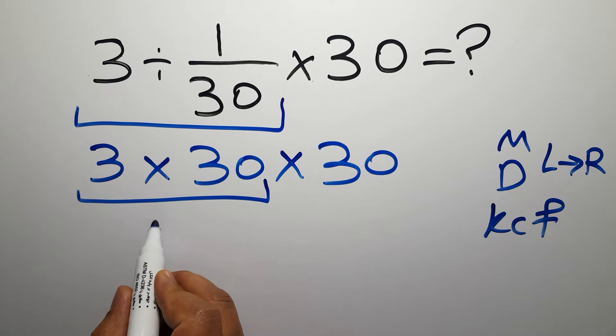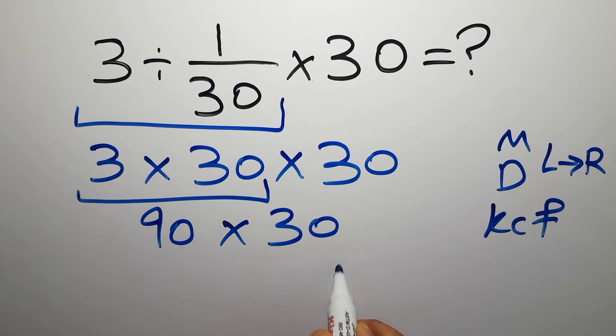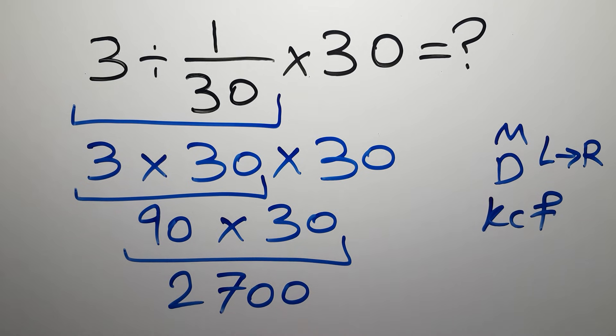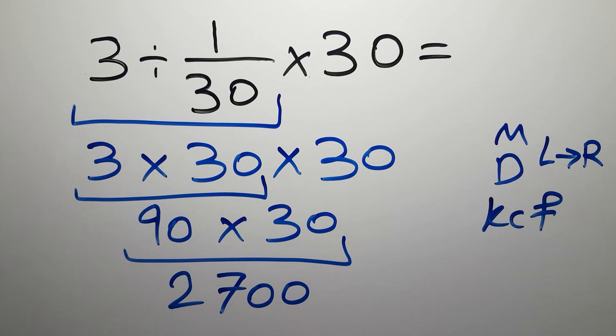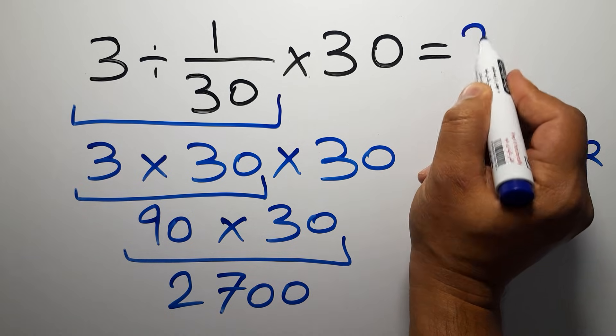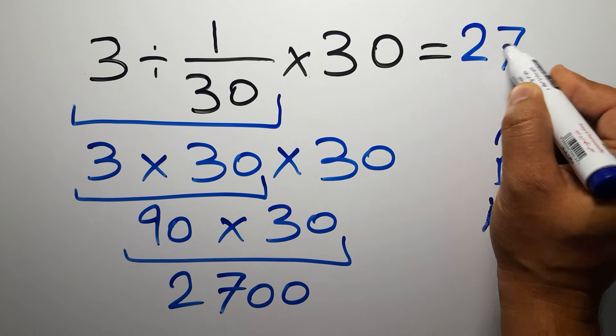So 90 times 30, which gives us 2700. And this is our final answer to this problem. The correct answer is 2700.